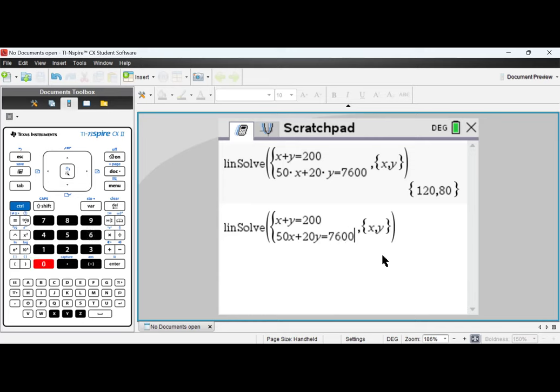You just need to press enter. Answer is coming in 120 and 80. So x value is 120 and y value is 80. That means the question was asking how many rulers he will buy. He will be able to buy 120 rulers and 80 pens with 76 euros or pounds. Is that thing clear? Yeah. So he'll be able to buy 120 rulers and 80 pens. It's super easy. You just need to frame equation and rest is calculator.